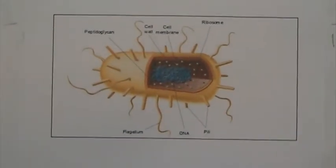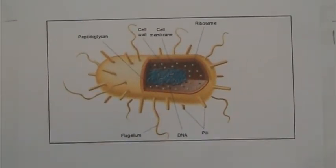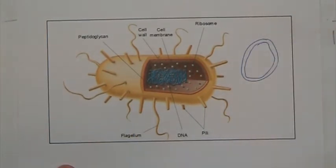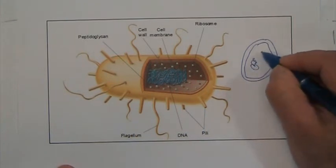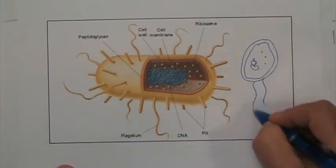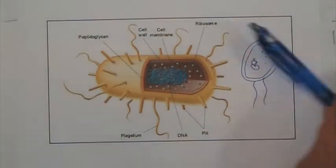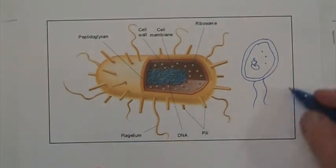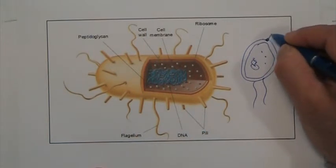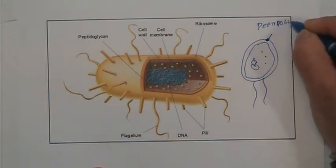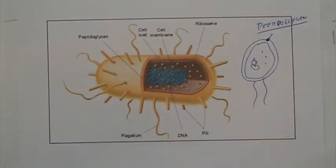Remember that these are beautifully idealized pictures of bacteria showing all the structures, but it can be as simple as a membrane, a cell wall, DNA, ribosomes, and a couple of flagella. The key difference with the other bacteria — the Archaeobacteria — is that the Eubacteria cell wall has peptidoglycan.